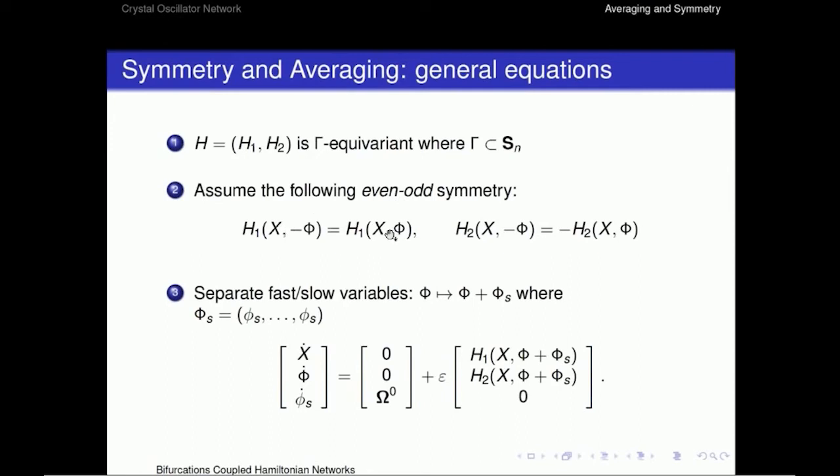We have some even symmetry for the H1 equation, which is from the amplitude. So H1 of X minus phi is H1 of X phi. And this odd symmetry for the H2, which is in the phase equations. Then what we do is we're going to separate the fast and slow variables. So phi will be replaced by phi plus phi sub S, where phi sub S is just this fast variable. And what happens then is that we decouple the slow dynamics in X and capital phi, just written by epsilon H1, H2. And then the fast dynamic is just the last equation, PS dot, which is omega 0.